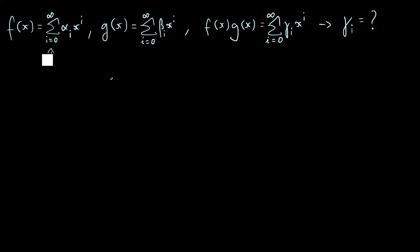We also have a similarly defined function g of x, except the coefficients are β_i instead of α_i. What we want to know is: if we multiply f and g together to get a new function f(x)·g(x), and we want to write that as a power series where the coefficients are γ_i, what do these γ_i coefficients have to be? That's the question we're trying to answer.